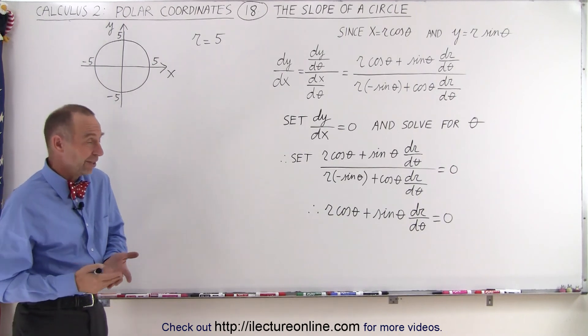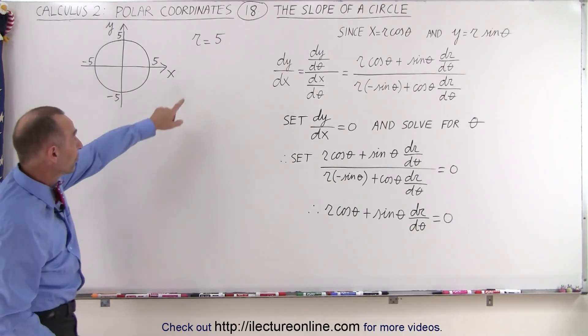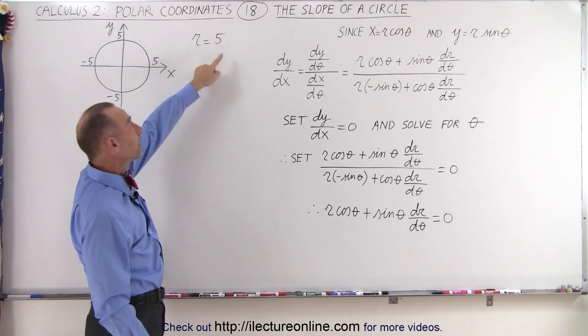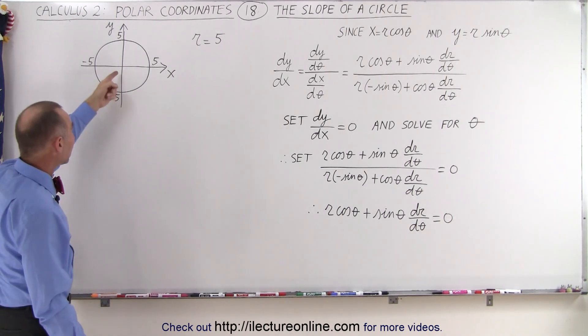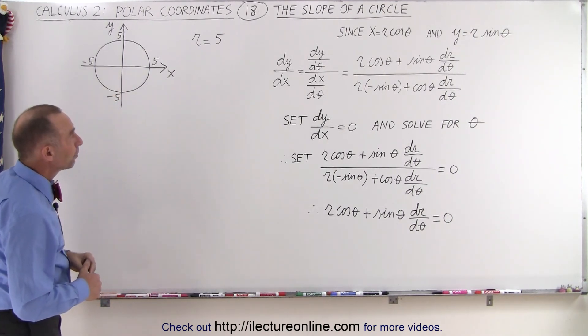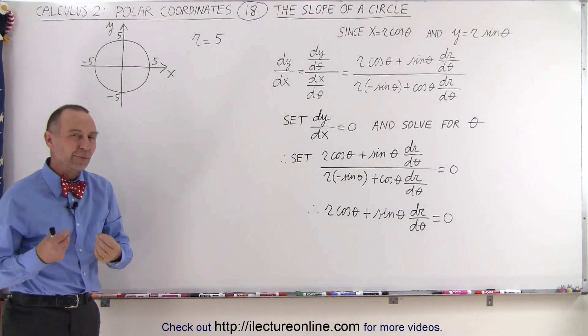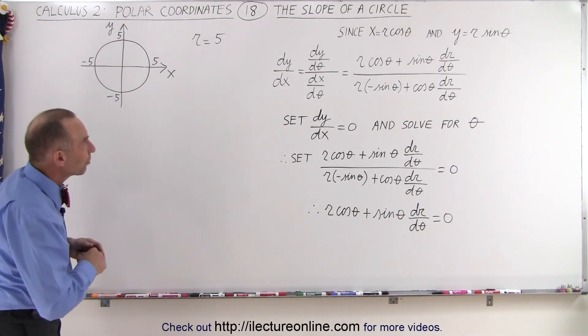Now, you would think a circle is really easy, and it is, because the equation is very simple. In this case, r equals 5, so the radius of the circle is 5, centered at the origin. Let's go through the exercise to go through some interesting concepts here as well.